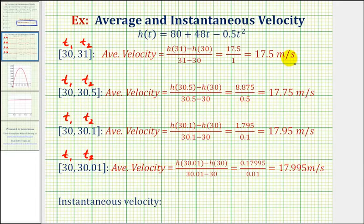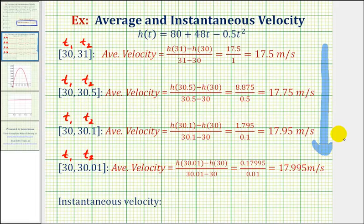Notice that as the two endpoints of each interval get closer and closer together, approaching t equals 30, the average velocity appears to be approaching 18 meters per second at t equals 30. This would be our prediction for the instantaneous velocity at t equals 30.